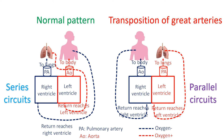When the aorta is connected to the right ventricle, the blood returning from the body after oxygen extraction is pumped back to the body. There is no chance for blood to get oxygenated from the lungs. Normally, the blood returns from the body to the right ventricle and gets pumped to the lungs, reaching the left ventricle only after oxygenation. In transposition, this does not happen.